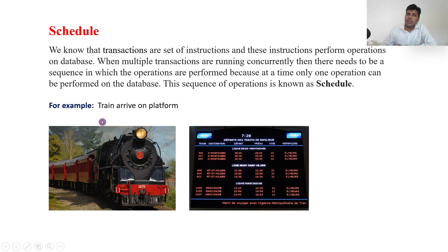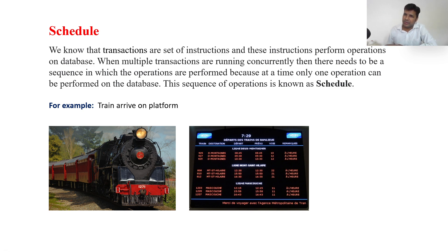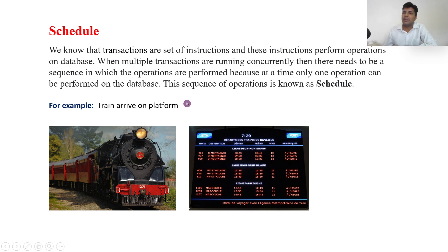A simple example: a train arrives on a platform. There are only two platforms but multiple trains, so all the trains cannot come at the same time. We arrange them in different slots and different times so that one comes, then another can come on the platform — one comes and goes, after that the other one. There will be no collision. Same way, we perform scheduling on the database.